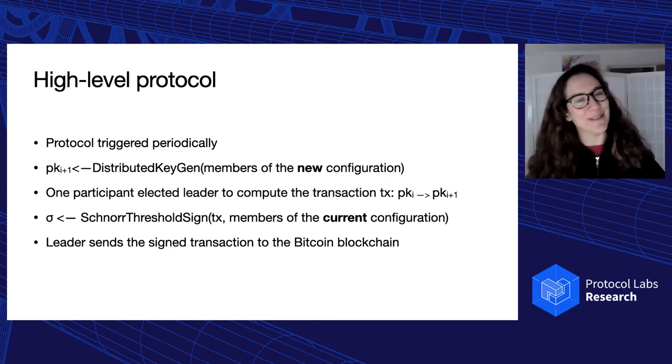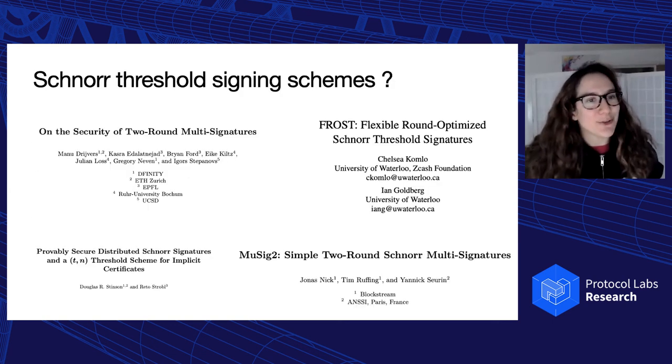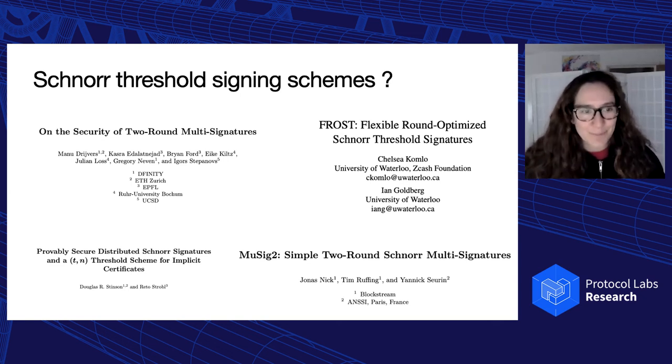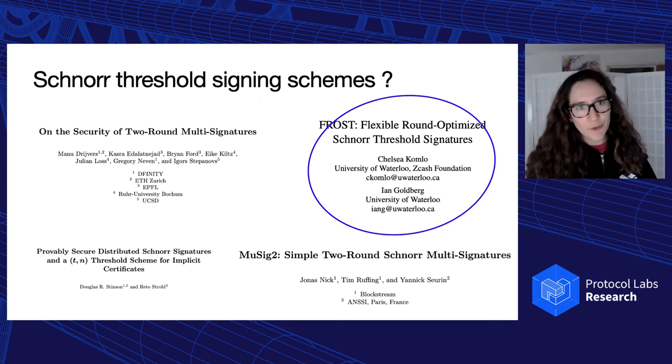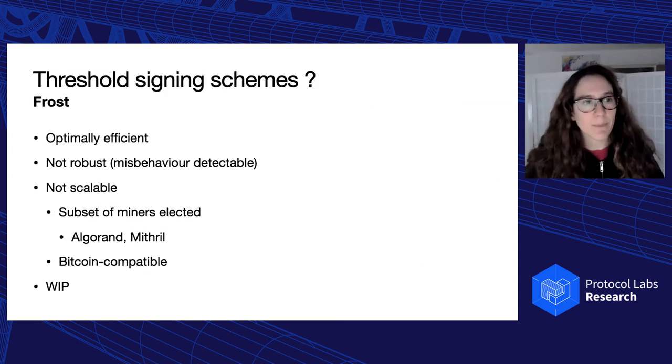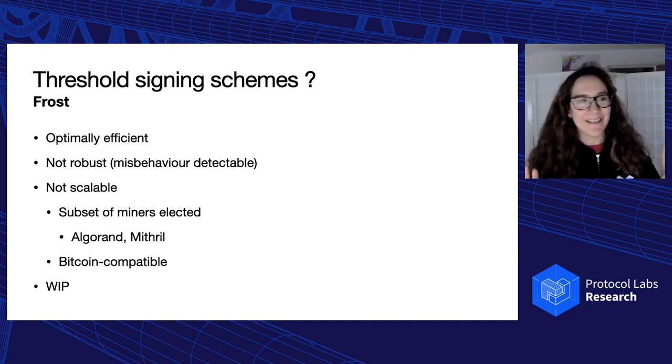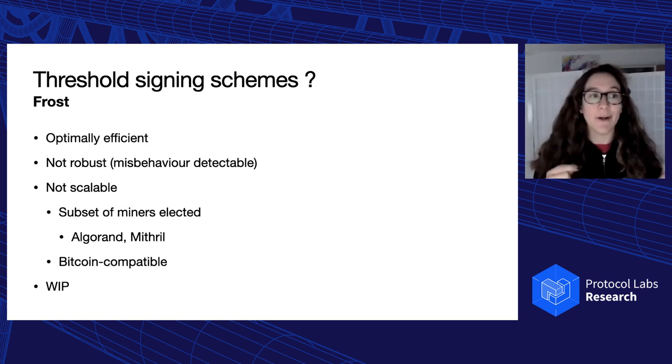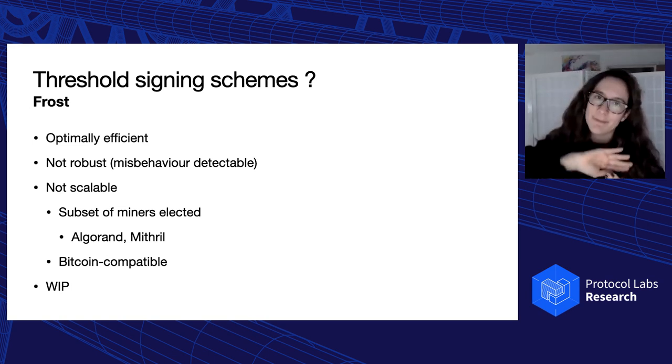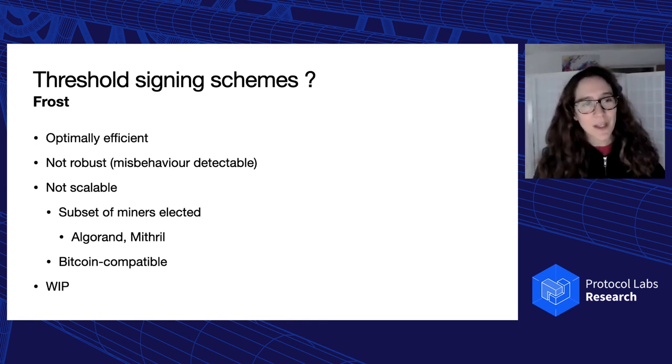One big question when we see this protocol is what threshold signature scheme should we use? There are many of them. There exists some multi-sig, some threshold sig that gave different warranties, have different properties. So for now, we have chosen FROST, which is quite a new protocol that was proposed for efficient Schnorr threshold signature. So the idea behind FROST is that it's optimally efficient. So assuming that nothing bad happens, then the protocol is quite efficient. However, it also has the drawback of not being robust. So if we have one participant that misbehave or that abort, then the protocol cannot complete. However, misbehavior is detectable. So what will happen in this case is that we will remove the misbehaving participants and start again.